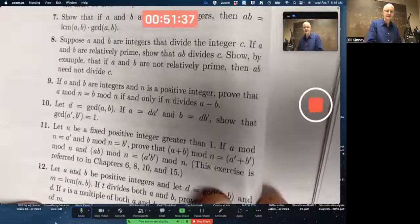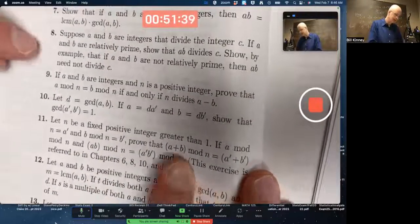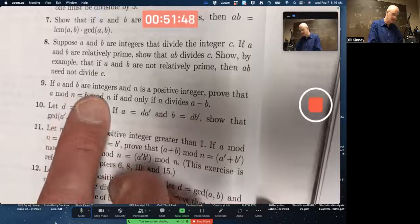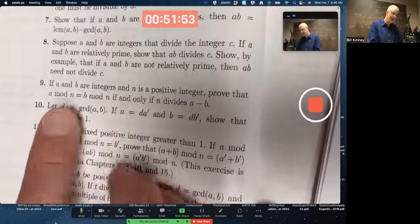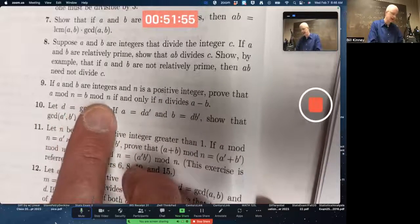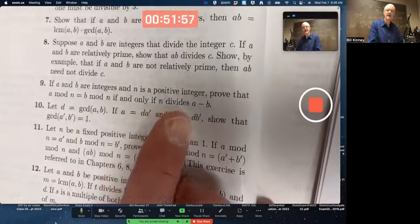What does problem number nine say to do? It says, if A and B are integers, arbitrary integers, and N is a positive integer, prove that A mod N equals B mod N, if and only if N divides A minus B.